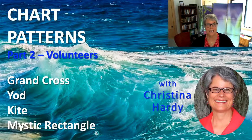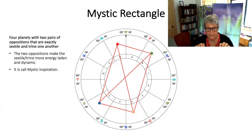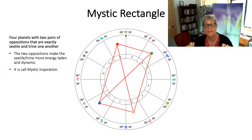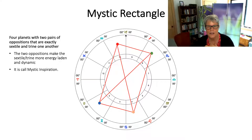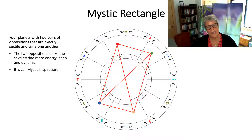We're going to dive right in beginning with the Mystic Rectangle. As a reminder, the Mystic Rectangle is a configuration of four planets. It's easiest to find — you have to have two oppositions. Not only do we have the two oppositions, but we have two trines and two sextiles, and it is considered the mystic inspiration, sort of the driving force behind the Mystic Rectangle.